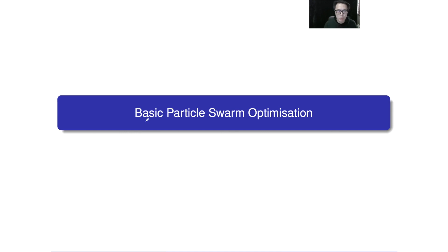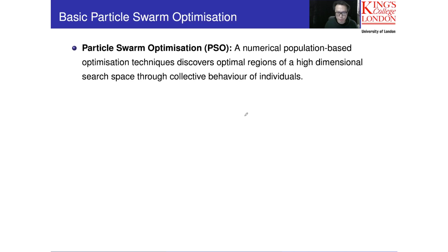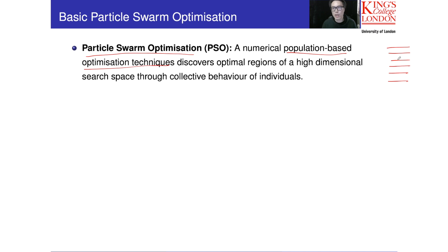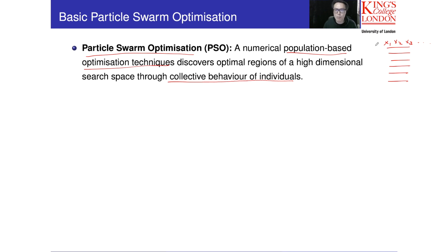PSO, or particle swarm optimization, is a population-based optimization technique. When we talk about population, we need a number of candidate solutions — particle one, particle two, particle three — each having a number of decision variables. These particles fly through a high-dimensional space through the collective behavior of all individuals, so they are able to work together to find a solution. This is similar to ant colony optimization using swarm intelligence, but we use a different concept and update rule.